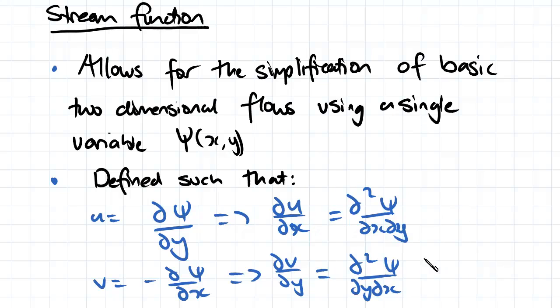And then from that, we can add these two together. Clearly, this is just du dx plus dv dy. So if we add these two together, they're going to cancel each other out. Therefore, they satisfy the 2D continuity equation.